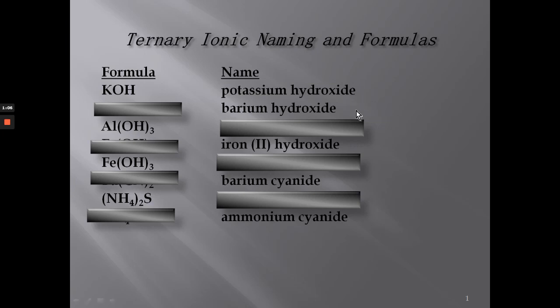Now we have the compound barium hydroxide. In order to write the formula, we need to know the oxidation numbers. We use the polyatomic ion sheet and look at the superscript — that plus or minus number — and the same with the periodic table, looking at group one, group two, or aluminum, or we calculate the oxidation. A hydroxide polyatomic ion has a negative one charge, and a barium ion has a plus two charge. To cancel, I need two hydroxides in parentheses with a subscript of two. So the formula for barium hydroxide is Ba(OH)₂.